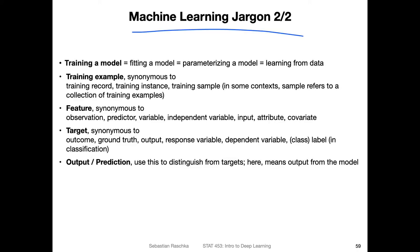Here lastly, machine learning jargon part two. So some more terms we will be using - I think this is more like useful as a cheat sheet, like something you can maybe refer to later when certain terms are unclear. So when we say, for example, training a model, that is the same as saying, for example, fitting a model or parameterizing a model or learning from data. Then the term training example - it's synonymous to saying, for example, training record or training instance or training sample.